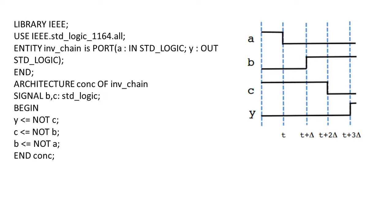Looking at the schematic, a is given as 1 in the starting phase and then becomes 0. Based on that we have b, c, and y. y is the complement of c. c was 1 for the first three cycles then becomes 0. Similarly, c is not equal to b, so it is complementary, and b is complementary to a. Observing carefully, every time a delay of delta has been added — the cycles go 0 to t, then t+δ, t+2δ, t+3δ — where delta has a very small value that checks the correctness of the events.